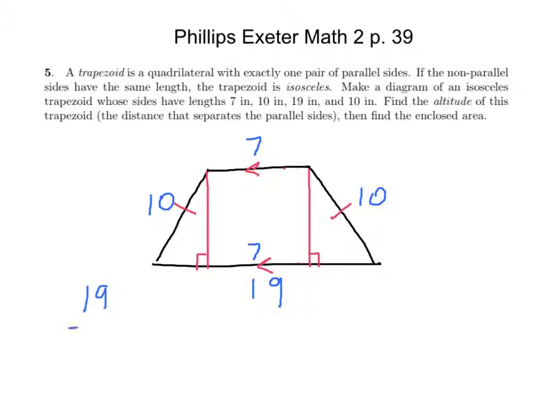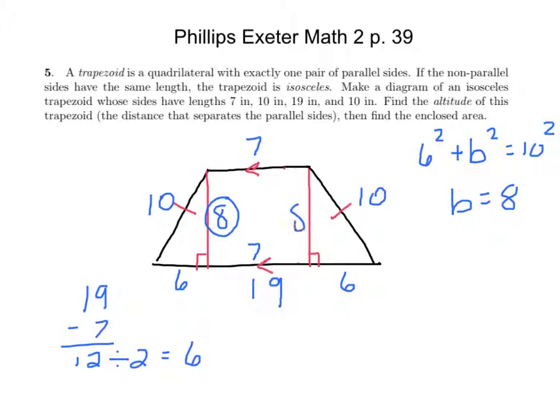So 19 minus 7 is 12. Divide that by 2, and that's giving us a 6 on either side. So you're saying that's 6 and that's 6. And now what did you do to find the altitude there? It's a special right triangle. So you could use Pythagorean Theorem: 6 squared plus b squared equals 10 squared. But like Daniel said here, we're going to get b equals 8. It is a nice special right triangle, a 6, 8, 10 right triangle. So we have our altitudes here of 8.